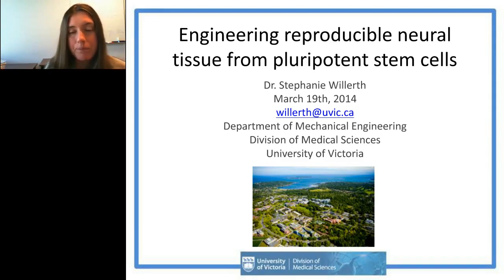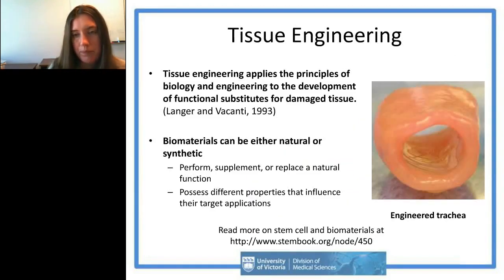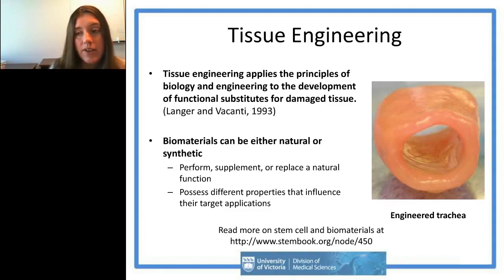Today I'll be talking about how to engineer reproducible neural tissue from pluripotent stem cells and describe different types of scaffolding available to help deliver cell therapies for neurological disorders. Since this is the emerging technology section, I wanted to define tissue engineering first. Langer and Vacanti define tissue engineering as using both biology and engineering to develop functional substitutes for diseased or damaged tissue.